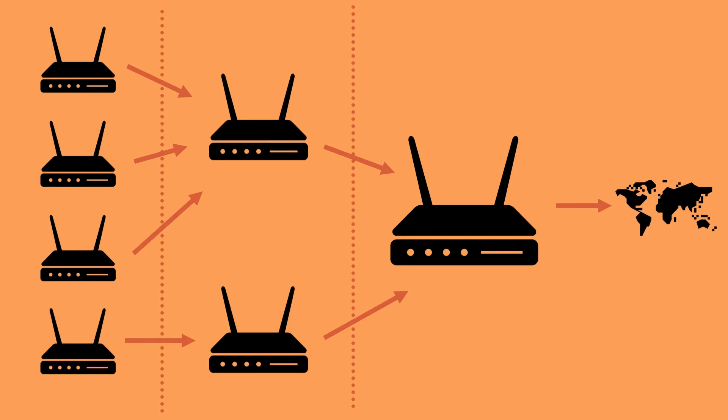IP addresses' ranges are allocated to specific regions of the world by internet registries. The router gateway in LANs will receive packets from the hosts connected to them and pass them on to a local router. This router will then pass the packet onto the national router, then to international routers if the packet needs to go somewhere else in the world. Routers are organised in a geographical hierarchy and they contain routing tables and information about other routers connected to them, allowing them to pass on packets in the right direction.